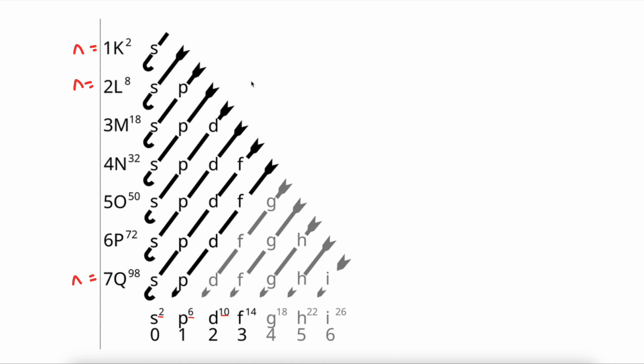This will all click when I show you an example with an atom. So let's now start by writing and drawing the electron configuration for the element oxygen. Oxygen is element number 8 on the periodic table, and thus has 8 electrons. To write the electron configuration for oxygen, we will do the following.